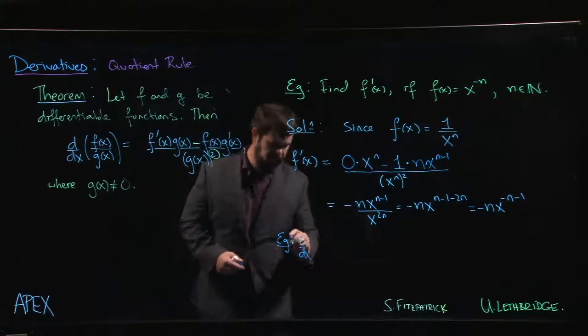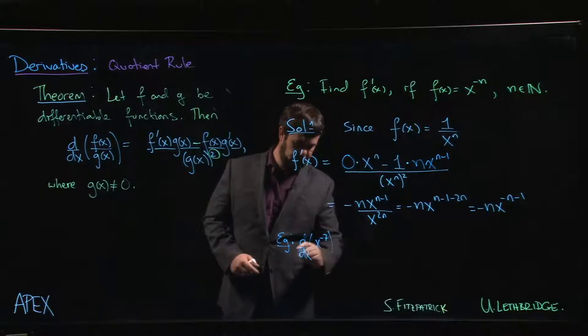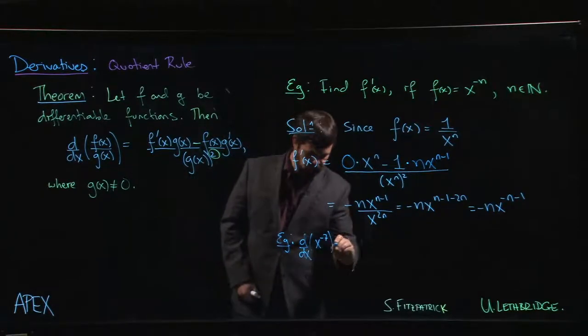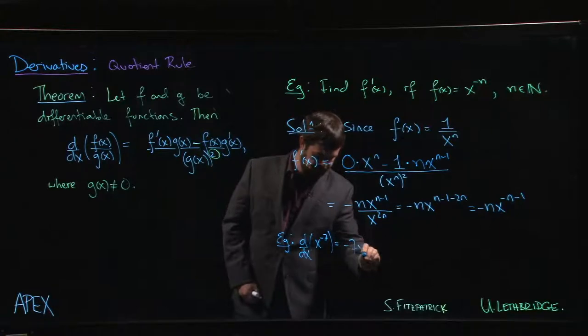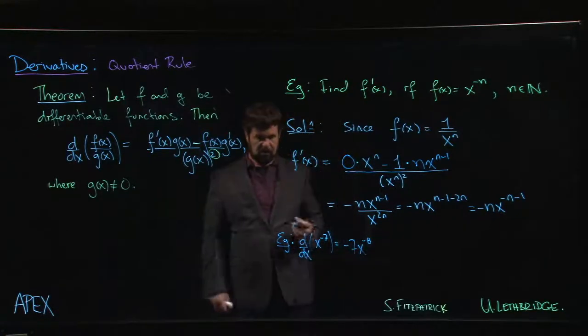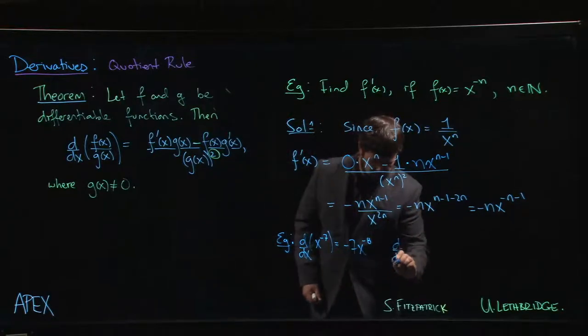That means that, for example, if I wanted to do the derivative of x to the minus 7, which is 1 over x to the 7, well that's going to be minus 7 x to the minus 8.